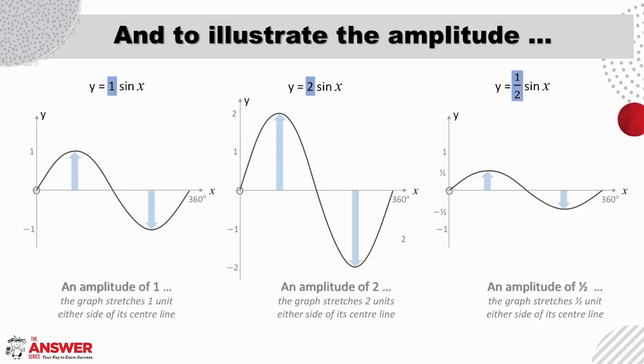So here we have the three graphs y equals sine x, y equals two sine x and y equals a half sine x. Remember that a trig graph is based on an equation in y and x and is represented on a Cartesian plane and so everything we know to be true for graphs and functions is also true for trig graphs.